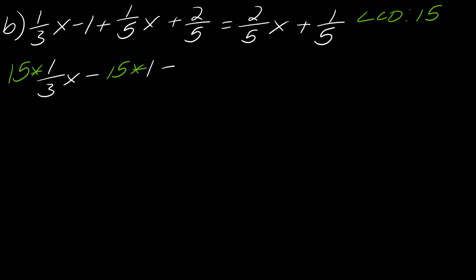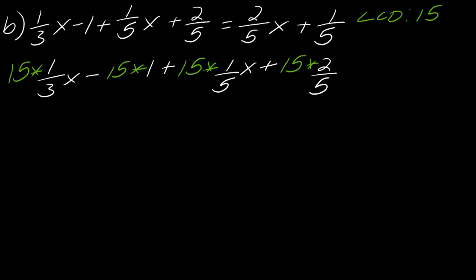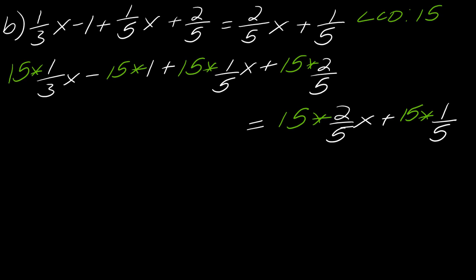So I've got 15 times (1/3)x, minus 15 times 1, plus 15 times (1/5)x, plus 15 times (2/5), and that all equals 15 times (2/5)x, plus 15 times (1/5).